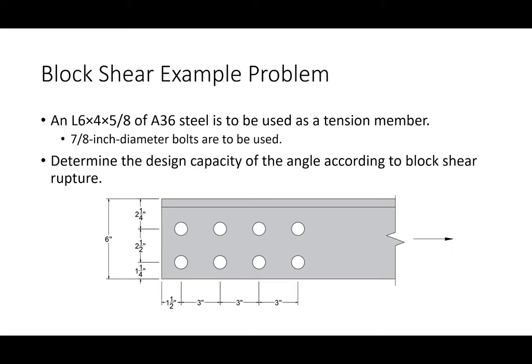We have an L6×4×5/8 of A36 steel to be used as a tension member, and we're using 7/8-inch diameter bolts. I did tweak this problem a little since last time — I changed the bolt diameter — so I might need your help on some of the math. We're going to determine the design capacity according to block shear.